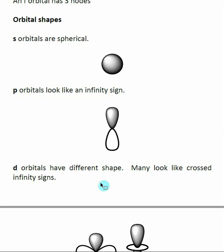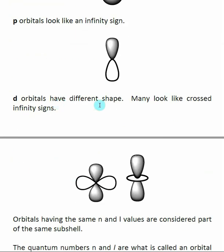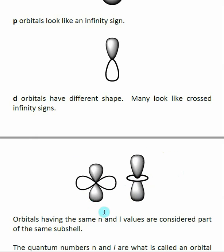As we get to different orbitals, their shapes become more complex. d orbitals have two basic types of shapes. Many look like two crossed infinity signs, and you can see the two nodes — one from each infinity sign, as if a sphere has been cut along two different lines. Some other d orbitals look like an infinity sign with a circle going through the middle. These have specific directions that we'll cover later when discussing d orbital bonding.